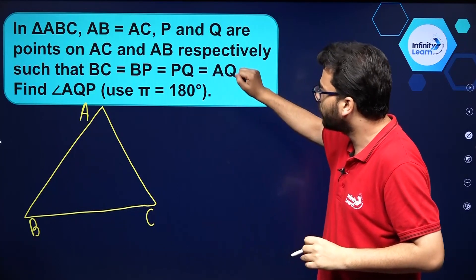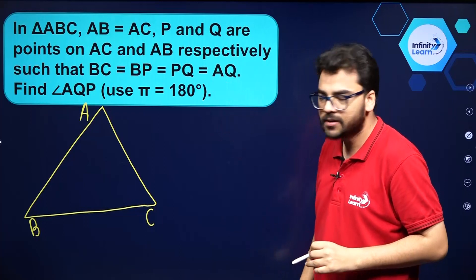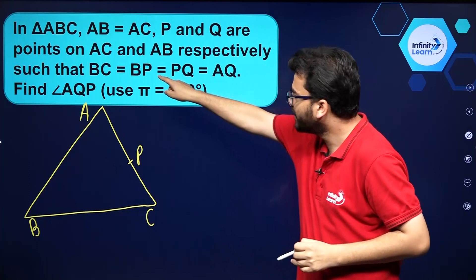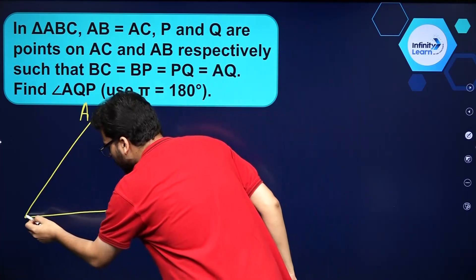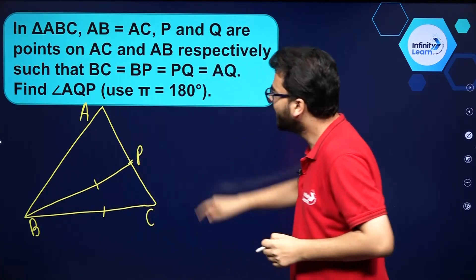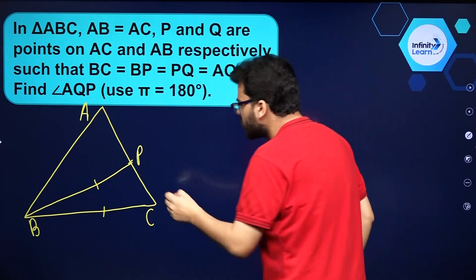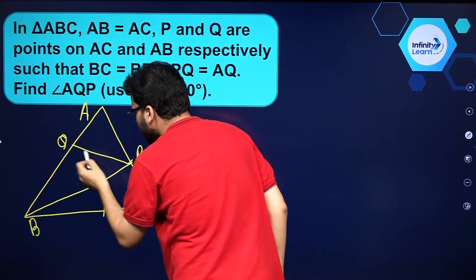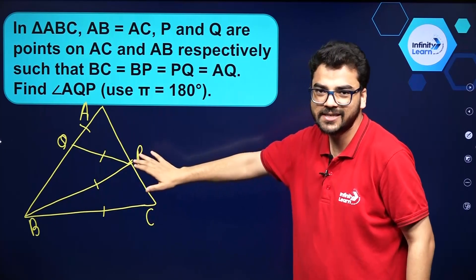Now let's see the other conditions. P and Q are points on AC and AB respectively. On AC there is a point P such that BC is equal to BP, meaning those two sides are equal. It is also given that PQ is equal to AQ. This is the complete situation in the given question.